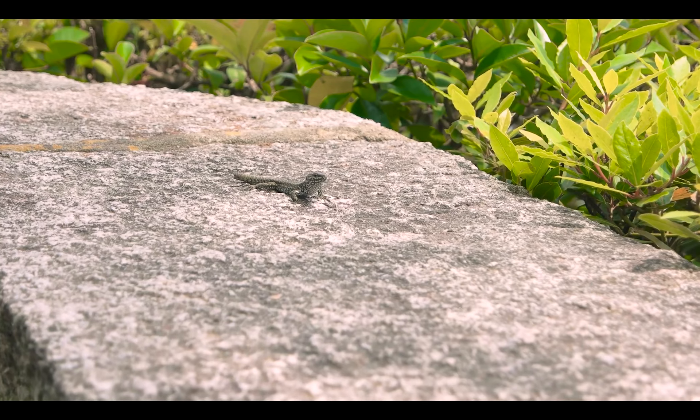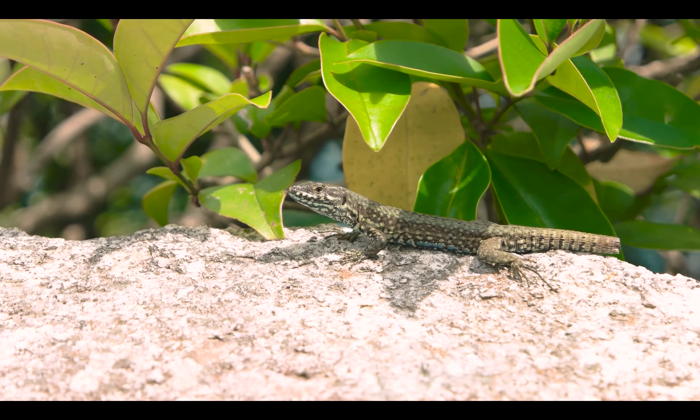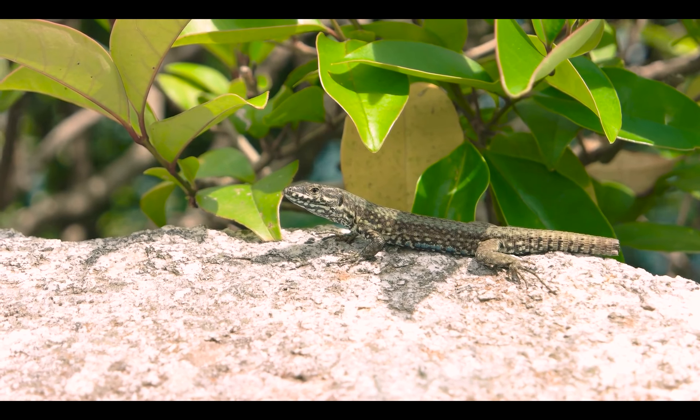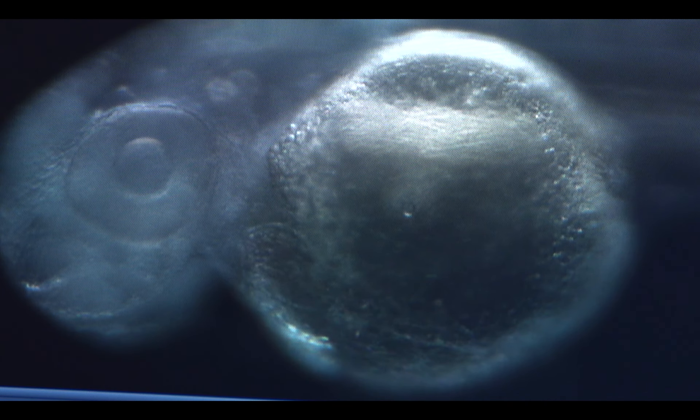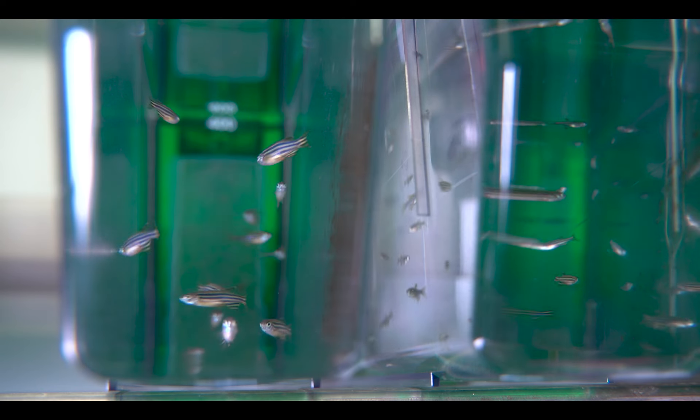When you think about endogenous regeneration, probably the most powerful example is a lizard or an amphibian that has lost its tail. A lizard that loses its tail can grow a completely new tail in a relatively short period of time. In the eye, there's a similar situation. Some types of fish, such as zebrafish, have been shown to regenerate an entirely new eye once when lost.